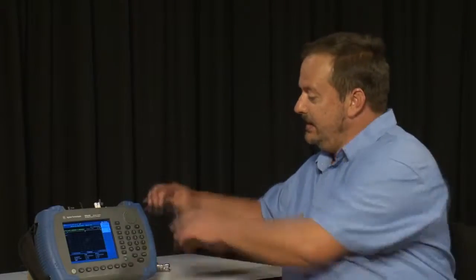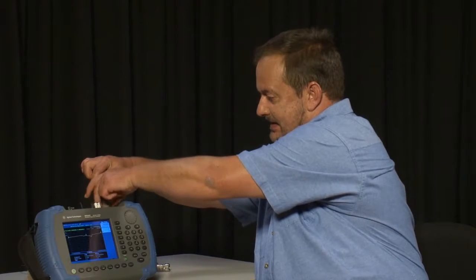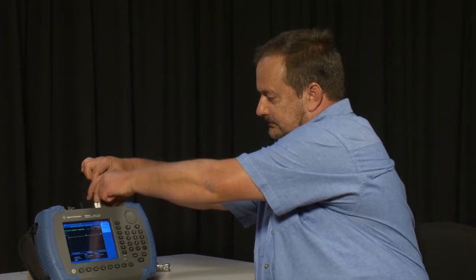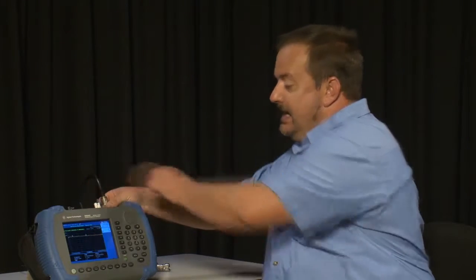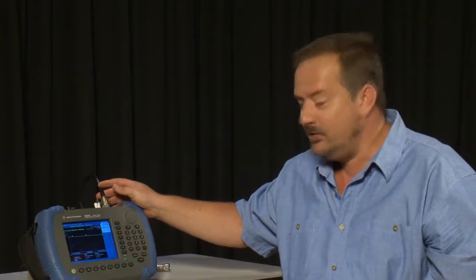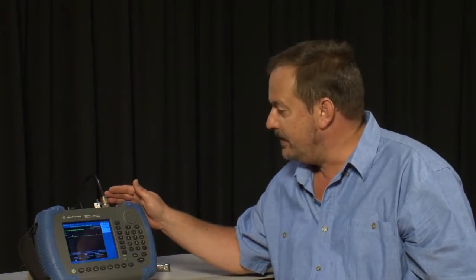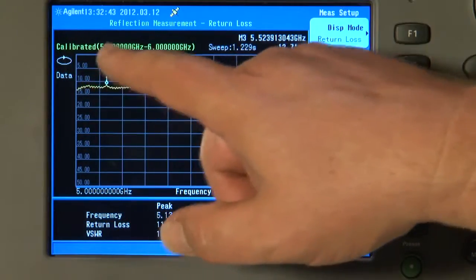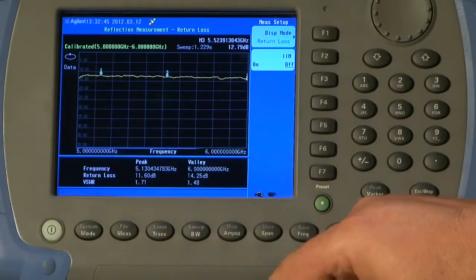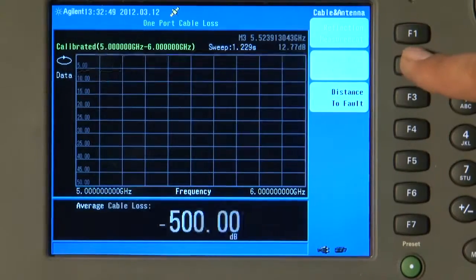So all I need to do is connect my cable to the HSA. And because we want to test this cable over the same frequency range that we tested the antenna in the previous measurement, I do not need to perform another calibration. It says the instrument is already calibrated between 5 and 6 GHz. All I have to do is press the Mesh key and select one port cable loss.